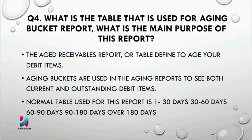The next question is: what is the table used for an aging bucket report, and what is the main purpose of this report? The aged receivables report or table is defined to age your debit items. Aging buckets are used in aging reports to see both current and outstanding debit items. For example, you can define an aging bucket that includes all debit items that are 1 to 30 days past due. The normal table used for this report is: 1 to 30 days, 30 to 60 days, 60 to 90 days, 90 to 180 days, and over 180 days.